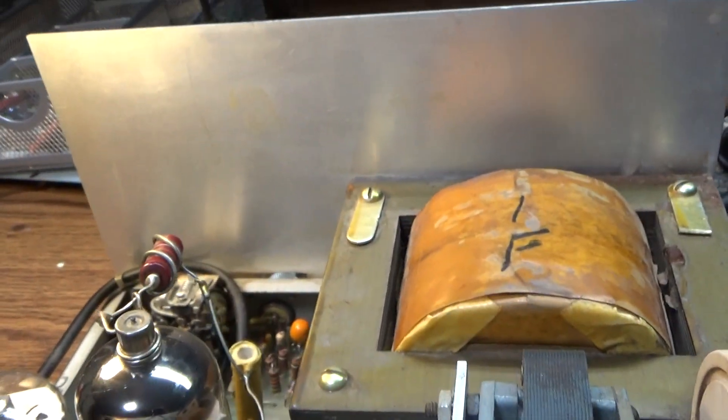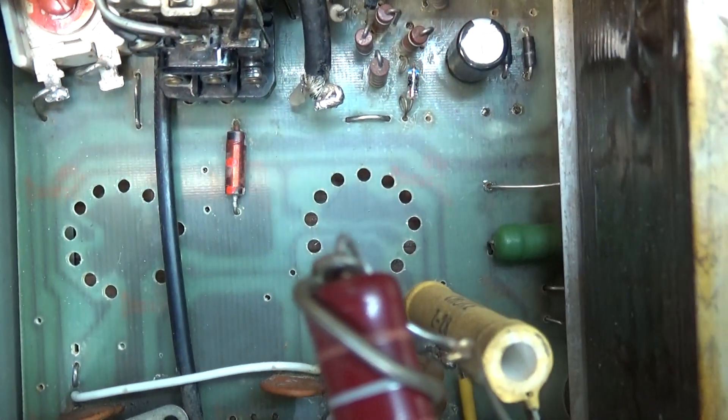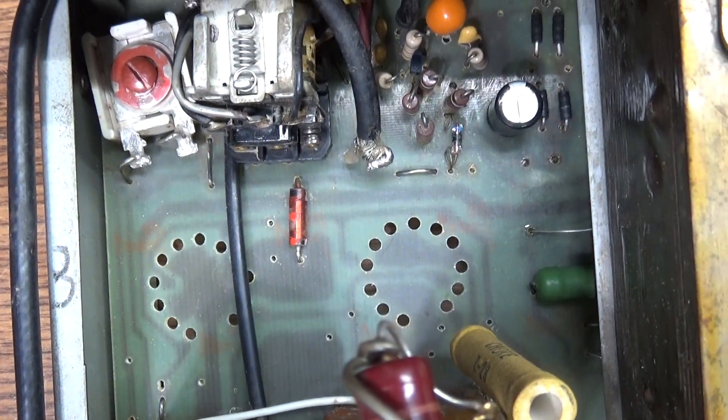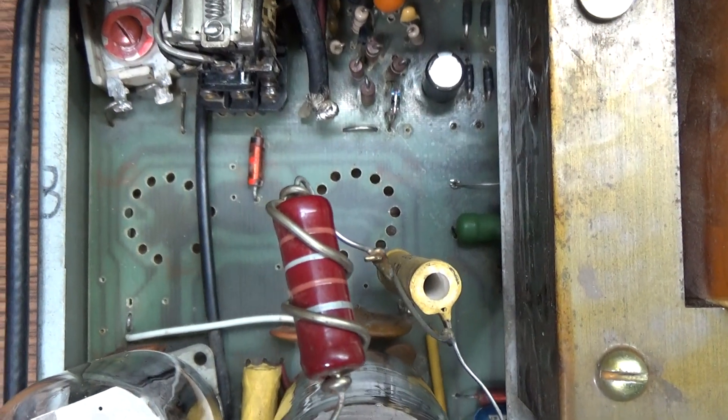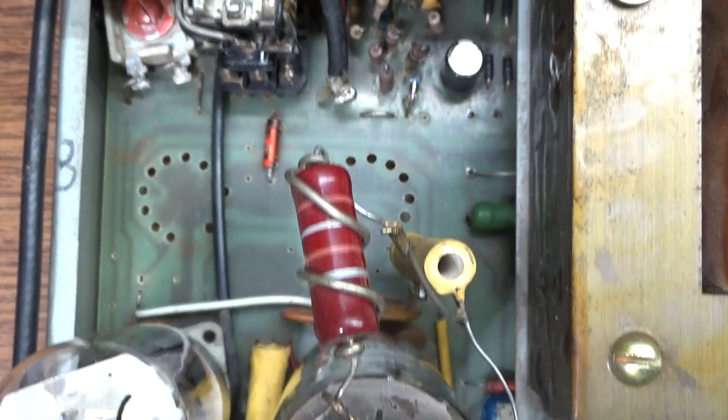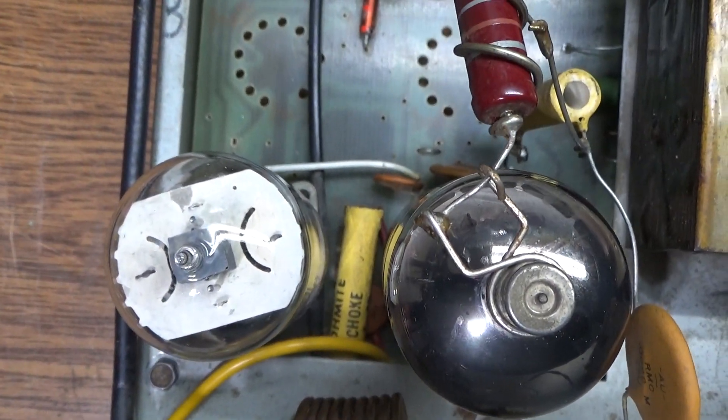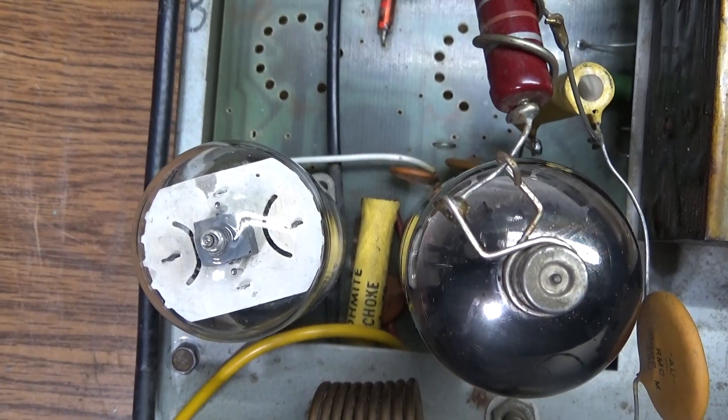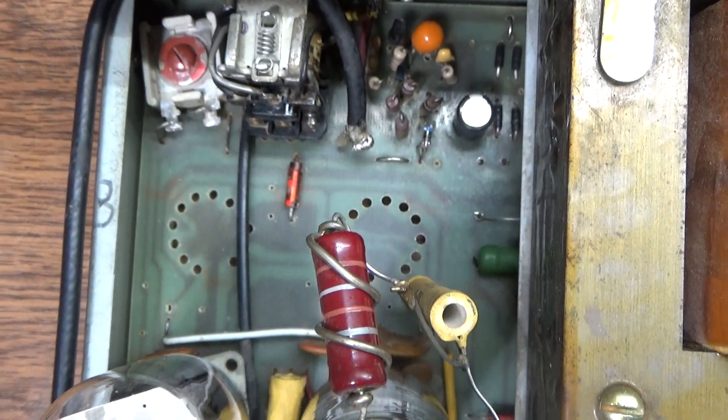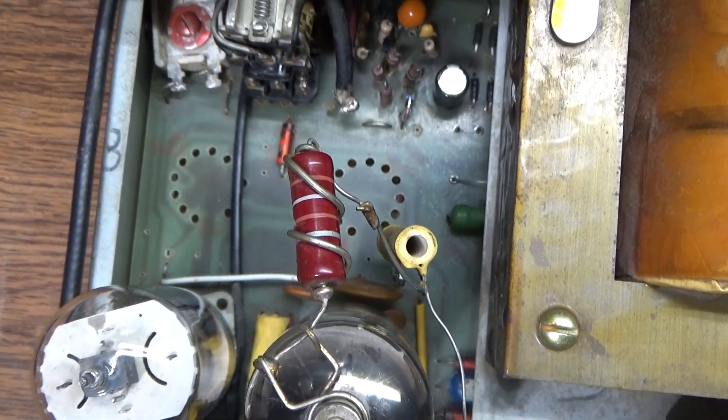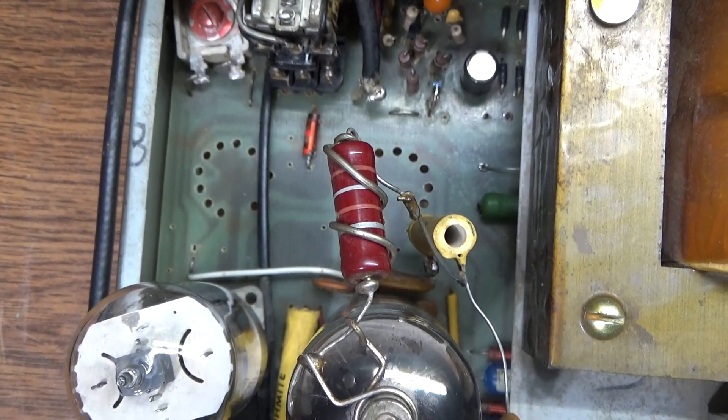You can see that the other two tube sockets are not populated. What Varmint did was use the same exact board for the 150, 250, 350, and 450. On the 150 it's one driving one. The 250 and 350 are one driving two. The difference between the 250 and 350 is the 350 has more voltage and a heavier power supply. The 450 has one driving three.